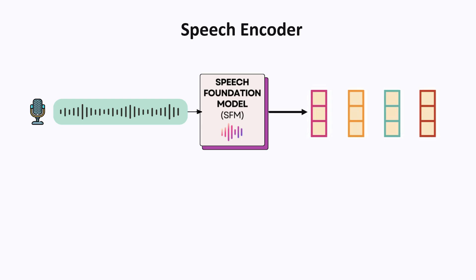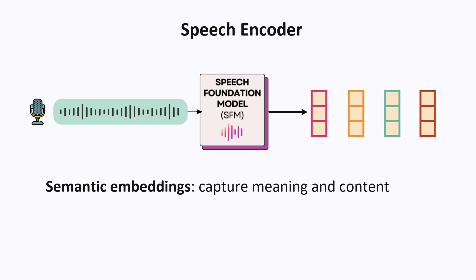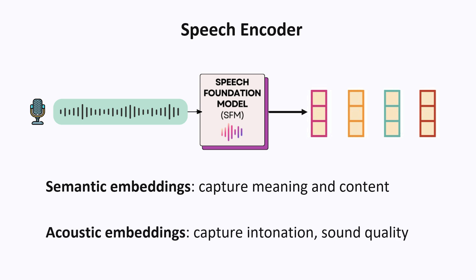The speech encoder is sometimes called a speech foundation model, and this model transforms a speech input into a sequence of vectors. These vectors mainly contain two types of information: semantic information that captures the meaning and content of the speech, and acoustic information that captures the speaker's voice quality and intonation. A combination of both types of information is contained in the vectors output by the speech encoder.